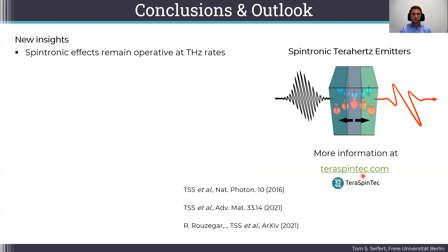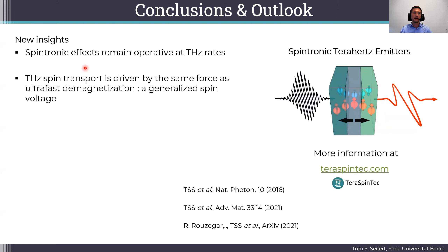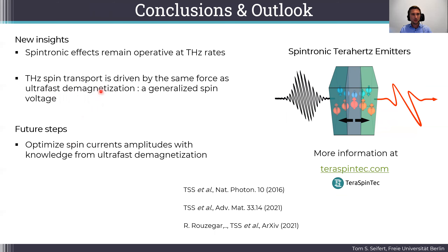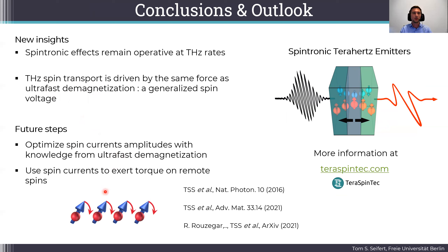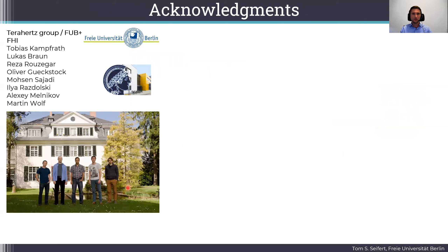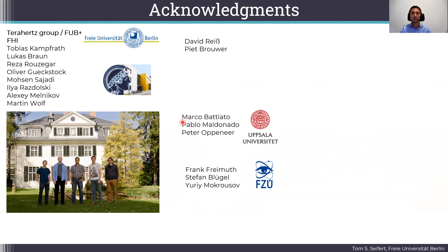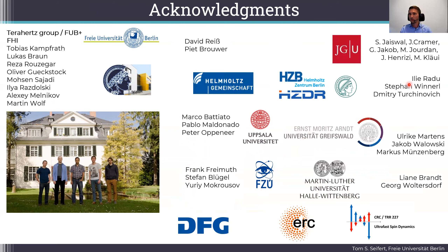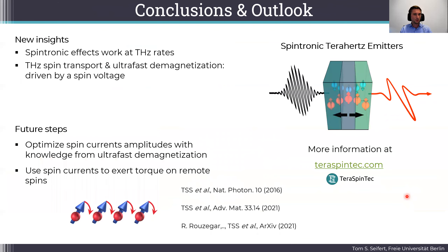To conclude: spintronic effects remain operative at terahertz rates. We found that terahertz spin transport is driven by the same force as ultrafast demagnetization — by a generalized spin voltage. In the future, we would like to use this knowledge from ultrafast demagnetization to enhance spin currents further, and eventually use spin currents to exert torque on remote spins. I would like to thank all the contributors: the terahertz physics group at the Free University and the Fritz Haber Institute, the theory groups of Pete Brouwer, Peter Oppeneer, and Yuri Mokrousov, and the sample supply groups of Matthias Kläui, Dimitri Torginowski, Markus Münzenberg, and Georg Woltersdorf. Thank you for your attention.